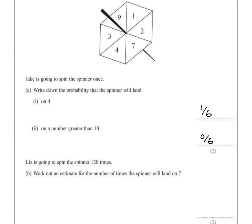Liz is going to spin the spinner 120 times. Work out an estimate for the number of times the spinner will land on 7. So the probability of landing on a 7 is 1 out of 6.